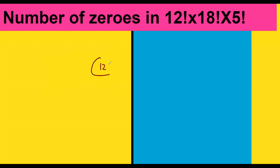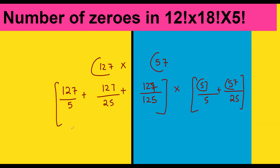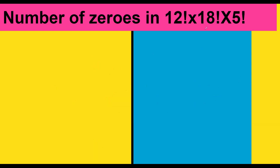When it is given as 127 factorial times 57 factorial, we do: 127 ÷ 5 + 127 ÷ 25 + 127 ÷ 125 for the left part. For the right part: 57 ÷ 5 + 57 ÷ 25. We don't go further because 125 is bigger than 57. For 127 factorial: 25 + 5 + 1 = 31. For 57 factorial: 11 + 2 = 13. Total: 31 + 13 = 44 trailing zeros. Whenever you have a product of factorials, you add them together.